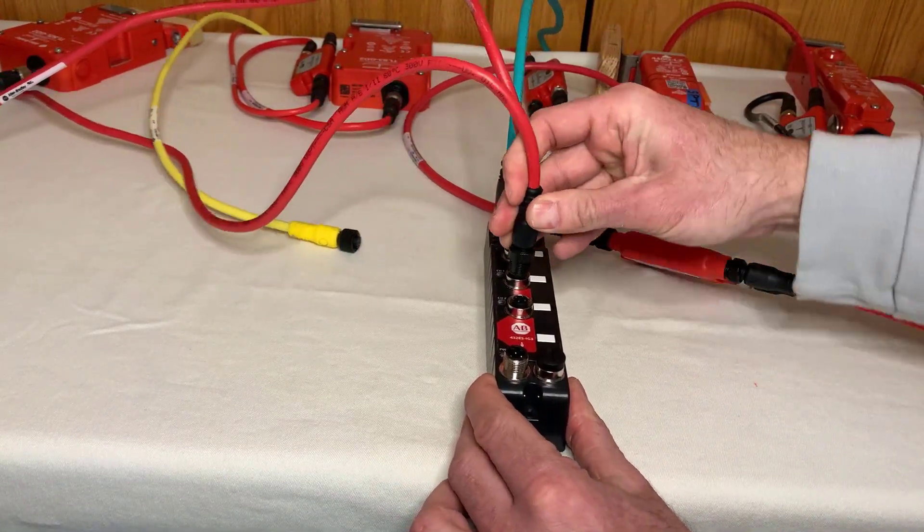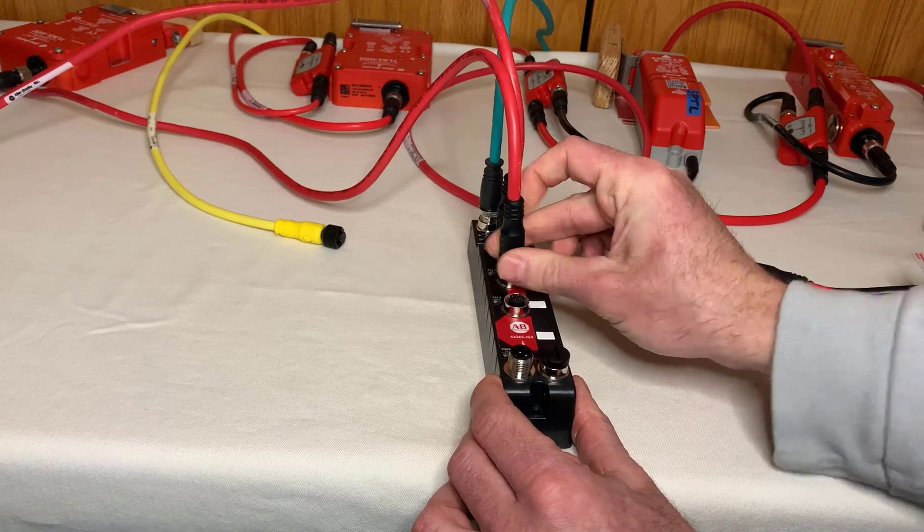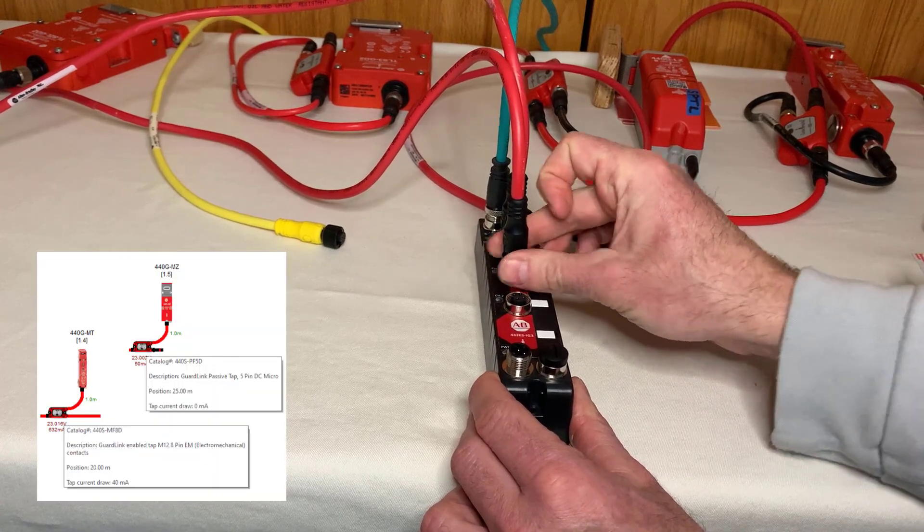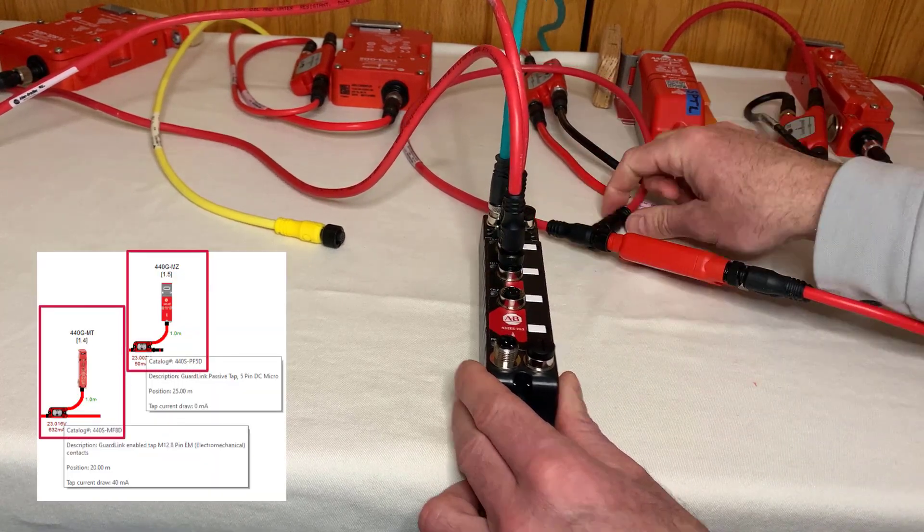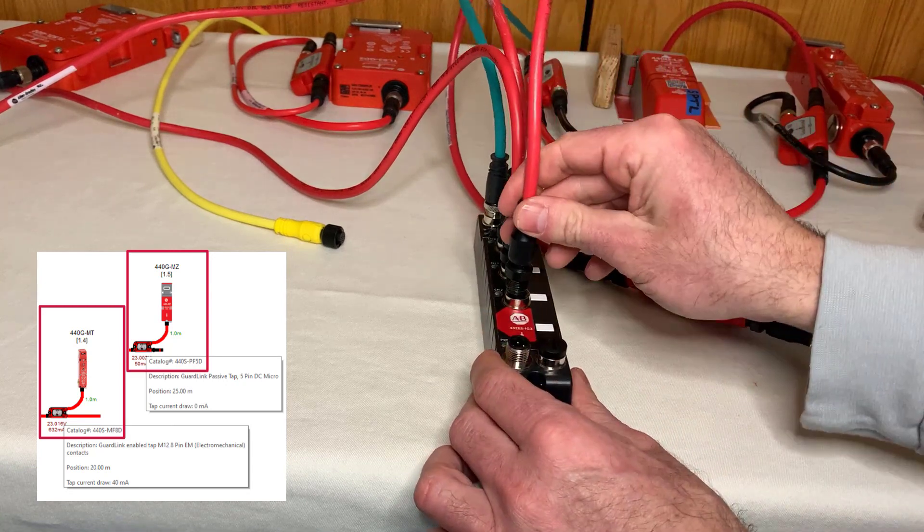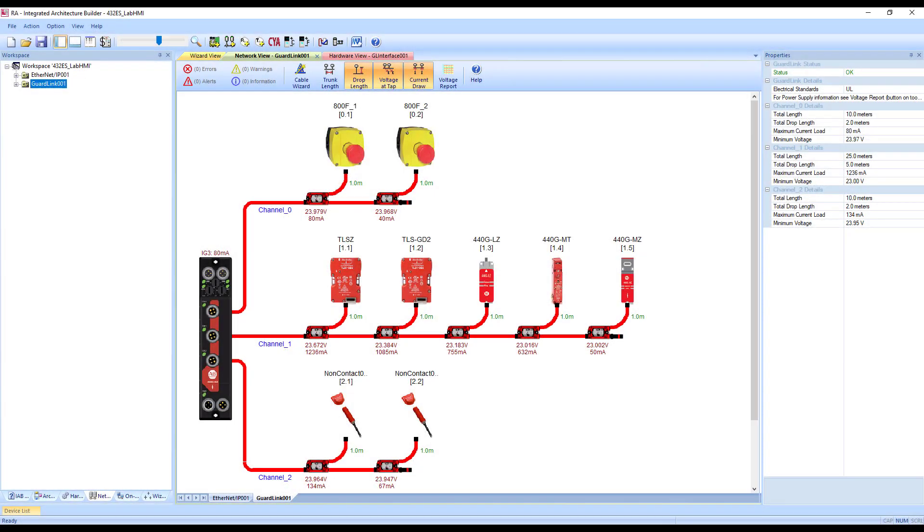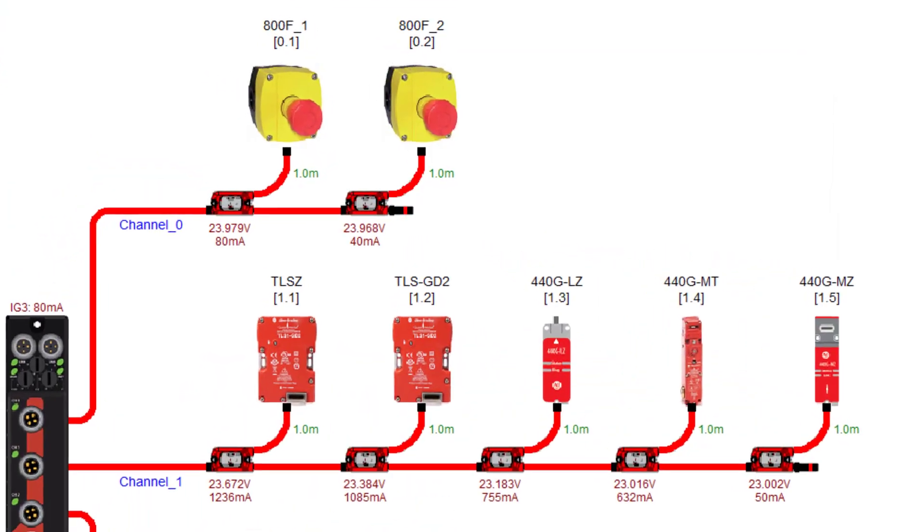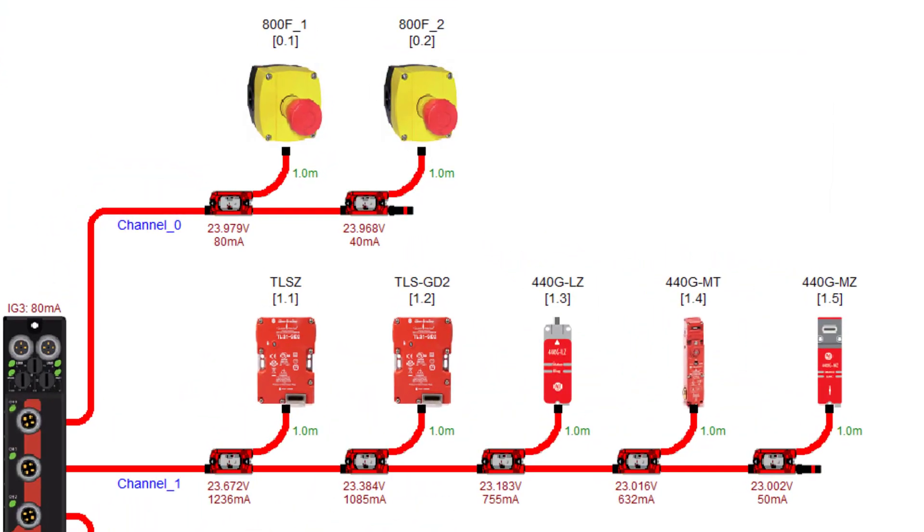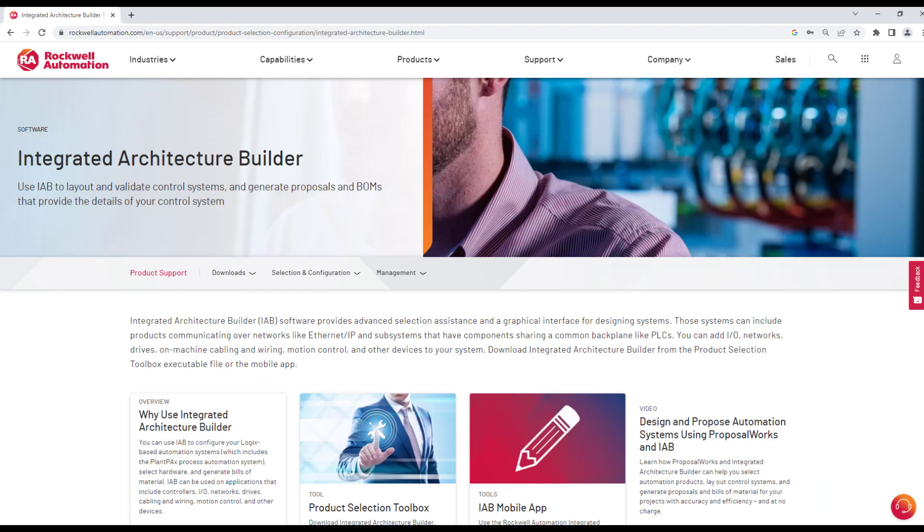GuardLink system design requires choosing the proper GuardLink tap and patch cords for each safety input. As devices are added, voltage drop and current usage must be calculated. Integrated Architecture Builder is a great free tool for designing GuardLink systems and tracking critical system variables. See rockwellautomation.com for more information on Integrated Architecture Builder.